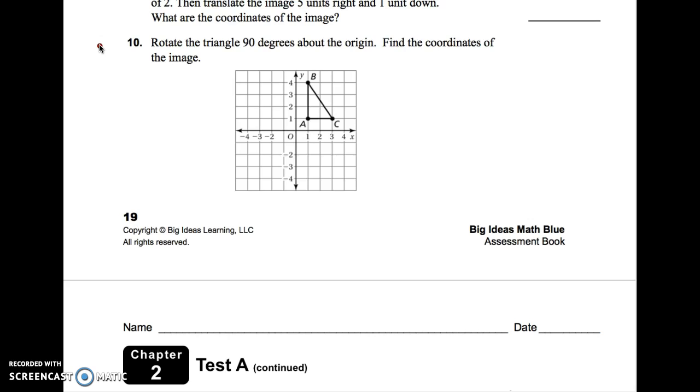So we are leaving off with number 10. If you look at number 10, it says rotate the triangle 90 degrees about the origin and find the coordinates of the image. Now, it's missing one piece of information. It tells you we're going to rotate at 90 degrees, but it doesn't tell you which direction. So I want you to write in here that we're going to rotate this 90 degrees clockwise. If you remember, that's the direction the clock goes. That's to the right.